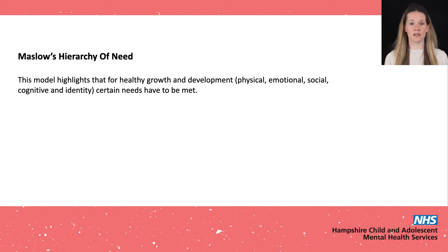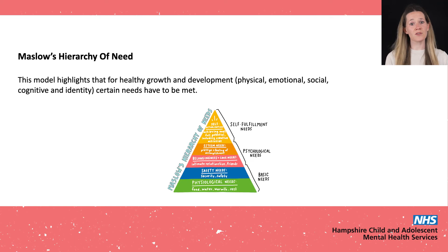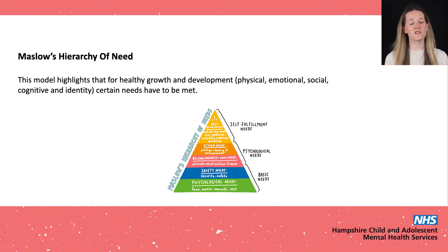Maslow's hierarchy of need. This model highlights that for healthy growth and development — physical, emotional, social, cognitive and identity — certain needs have to be met. Some needs are more of a priority than others, so they've been arranged into a pyramid of hierarchy. Listen to the following video that explains more about this model.